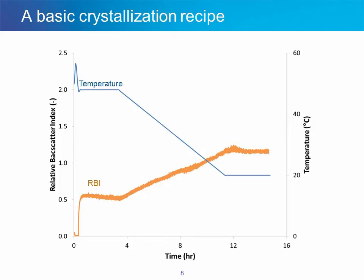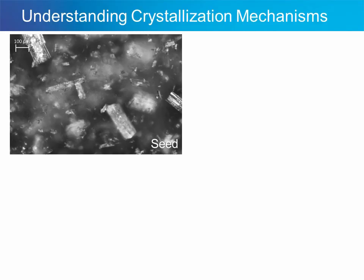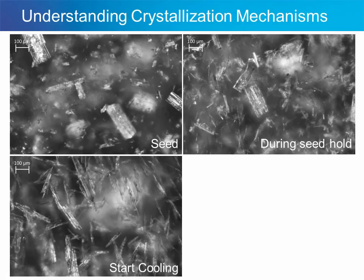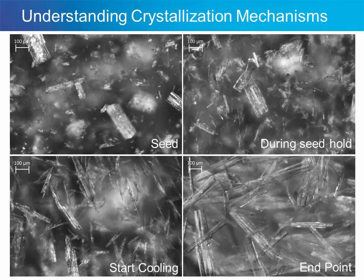In this example, we follow a basic crystallization recipe where we hold temperature constant, add seed, wait until the seed holds and reach a steady state, then decrease temperature inducing crystal nucleation and growth, followed by a hold period at the end to maximize yield. The RBI signal indicates where the seed is added, that the seed holds, identifies when the seed reaches steady state, tracks the growth and nucleation of the crystals, and indicates when steady state is reached at the end of the process. Looking at the microscope images for each of these points, we can see what the seed looks like, observe a secondary nucleation event during the seed hold, see what happens as cooling starts and crystals grow, and see what the crystals look like at the end. This combination of real-time microscope images with RBI is a powerful technique.